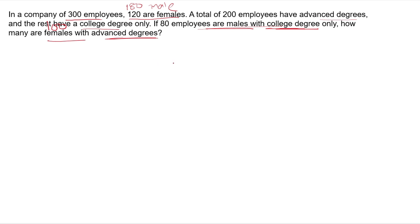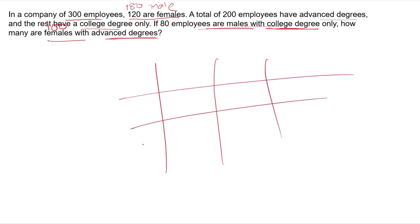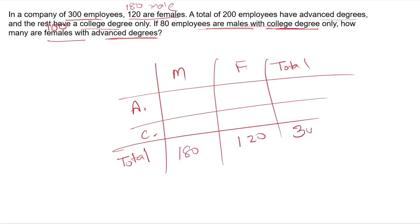This is going to be very easy using the double matrix method — the easiest way to do it. Set up columns: male, female, and total. Rows: advanced degree, college degree, and total. Female is 120, male is 180, total is 300. Advanced degree total is 200, so college degree total is 100.